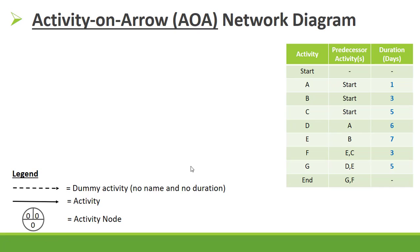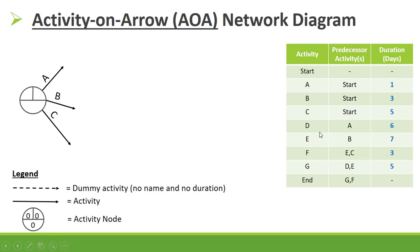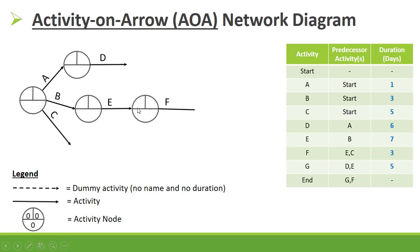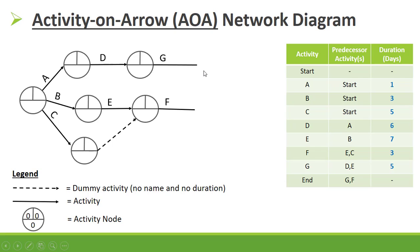Now let's do the main example. We start with a start node; activity A, B, and C are connected to start. Activity D is connected to activity A, E is connected to activity B, and F connects to activity E and to activity C — F is connected to activity C with a dummy activity. G is connected to D, and G is connected to E with a dummy activity. Then G and F are connected to the end node.